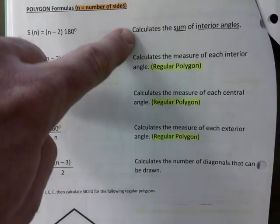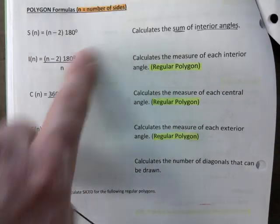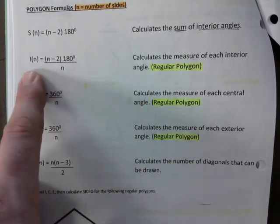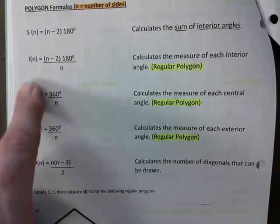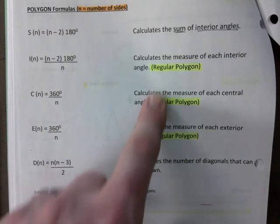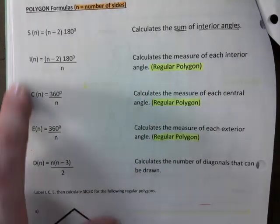The first one doesn't matter. Okay. The sum always works, but these three, I call them ice. You see that? I, C, E. I did that on purpose. These only work with regular polygons.